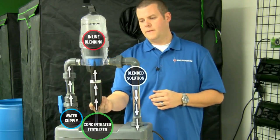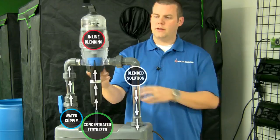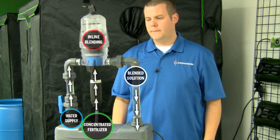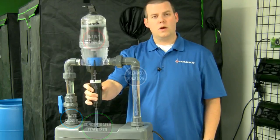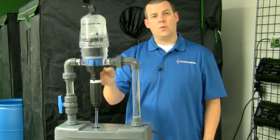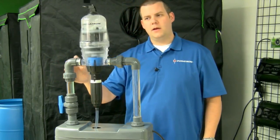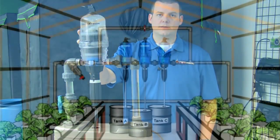And you can now see that piston moving up and down, pulling up that product from the base and drawing that concentrate, blending it in line, and putting it out exactly how we want it. So if we're going to set this thing at 1 to 100, we're going to get 1 to 100 anywhere from about a third of a pint a minute all the way to 14 gallons per minute on this particular unit.